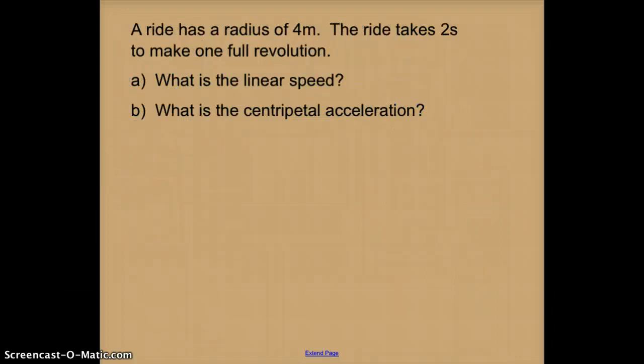Next problem, a ride has a radius of 4 meters. The ride takes 2 seconds to make one full revolution. Remember our definition of a time period is how long it takes to go around one time. So this is going around once in 2 seconds, so that means my time period is 2 seconds. So what is the linear speed?